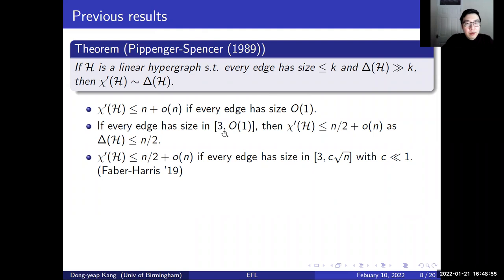Moreover, if we exclude all the edges of size 2, then the maximum degree is reduced to n/2, which implies that the chromatic index is roughly at most n/2 by Pippenger-Spencer. And very recently, Ferber and Harris were able to extend this result to allow much larger edges of size roughly on the order of square root of n.